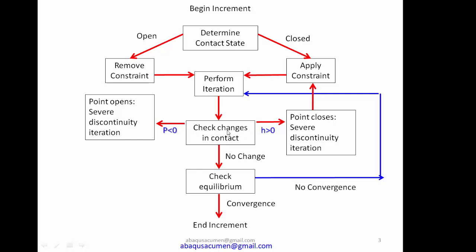In the severe discontinued iteration, Abaqus checks whether there is any change in contact status. It checks two things: first, if contact pressure is less than zero or negative, that means a node currently in closed condition is opening. Second, if penetration h is greater than zero, Abaqus understands that a point is getting close. It then goes to the 'point close' severe discontinued iteration and applies a constraint. Similarly, if something is opening, it goes to severe discontinued iteration and removes the constraint.